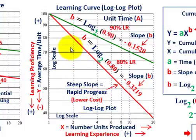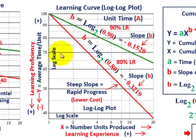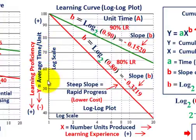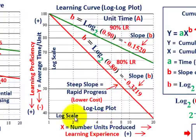I've used Maplesoft here to graph this. With our log scales, along our y-axis I'm showing the average time per unit — the same as what we had for our conventional graph, going down as we reduce average time per unit. Along our x-axis, these are the number of units produced, increasing as we move left to right.